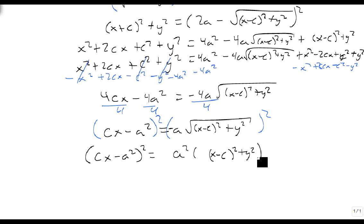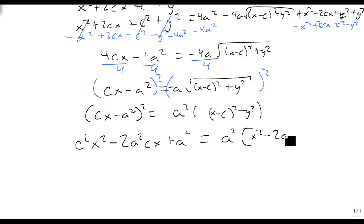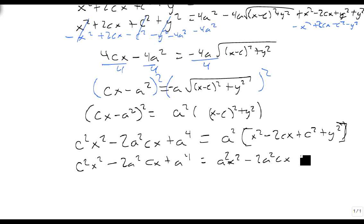Expanding the perfect square trinomial on the left gives c²x² − 2a²cx + a⁴ equals a² times (x² − 2cx + c² + y²). Distributing the a² on the right gives a²x² − 2a²cx + a²c² + a²y².